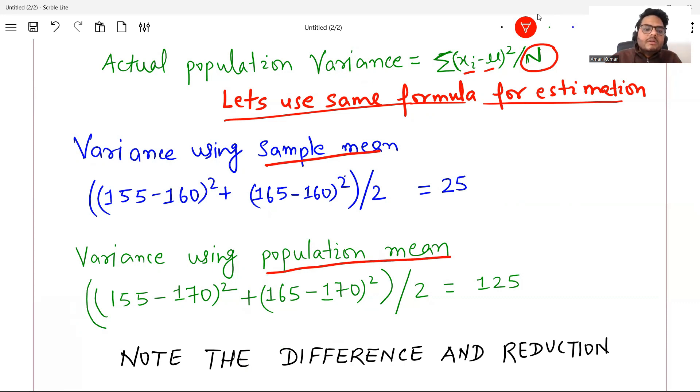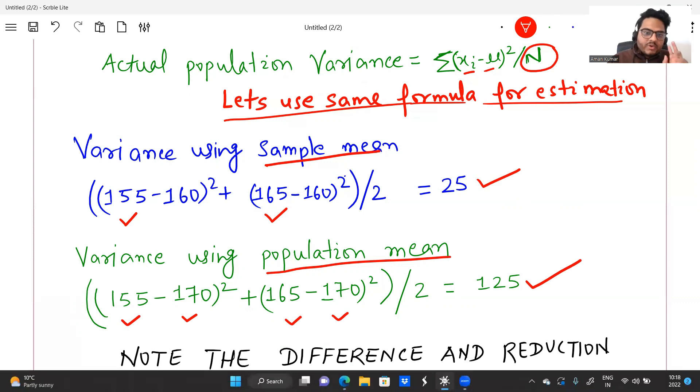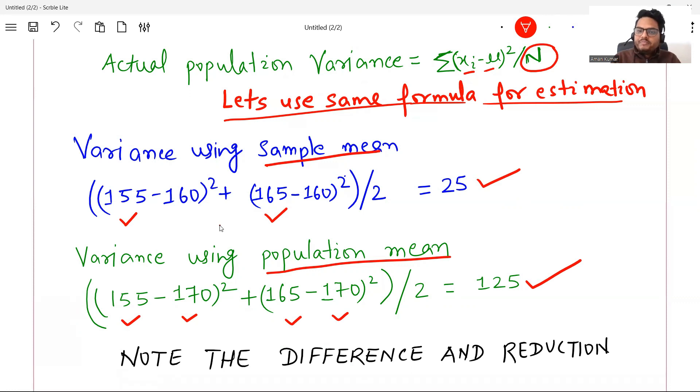Pay attention here. The observation minus sample mean, observation minus sample mean divided by N. What is my N? Two. What is output? I'm getting 25. Observation minus population mean, observation minus population mean divided by two because I'm using two. I'm not taking N minus one. So 125. Now one important thing to note here, pay attention how your variance is reduced. See here, what you are estimating using sample mean is 25, and what you are using using population mean is 125.